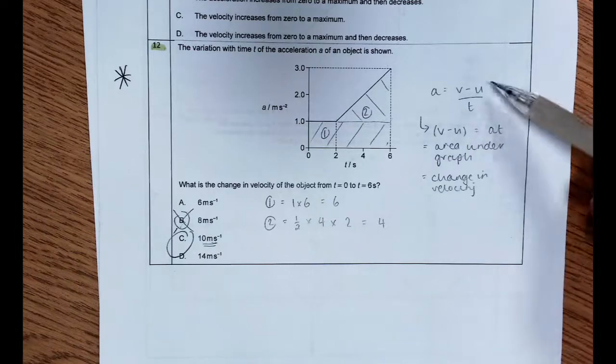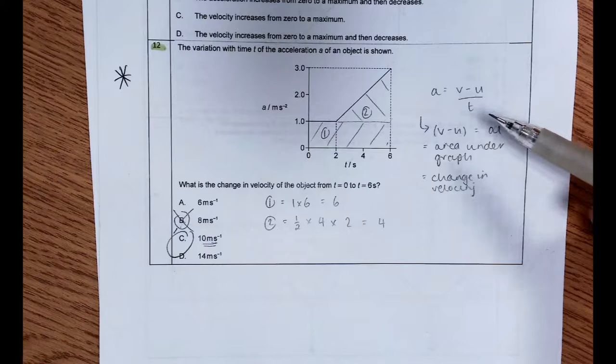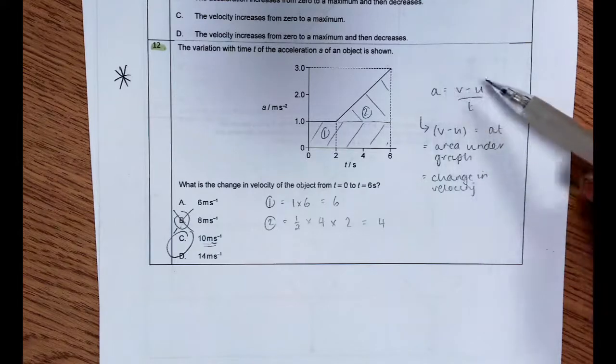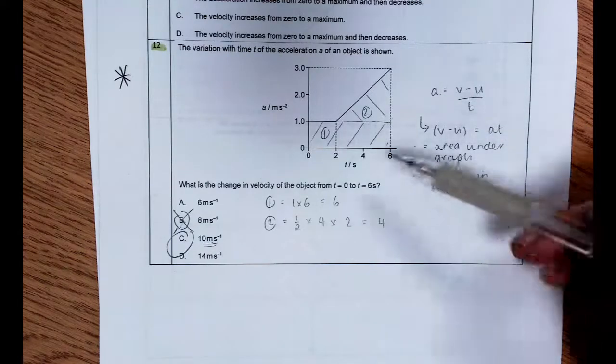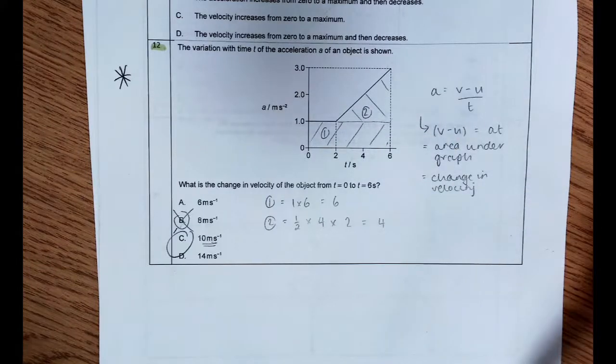We know that acceleration is change in speed over time, so if we do acceleration multiplied by time, we get the change in speed, and obviously that's going to be the area under the graph here to give us change in velocity.